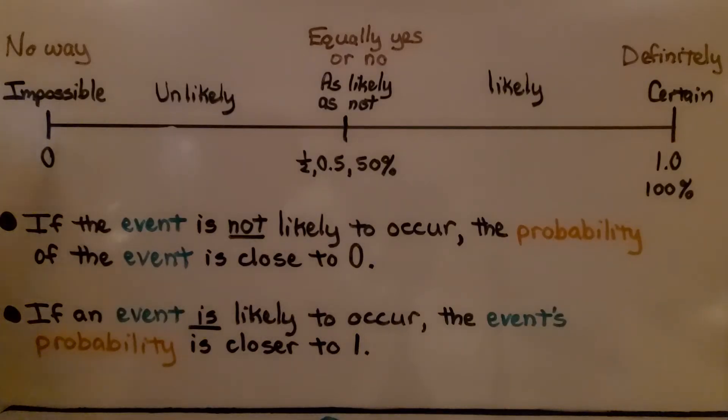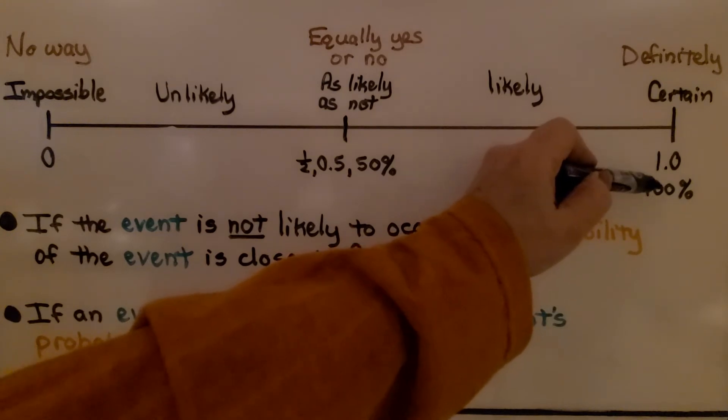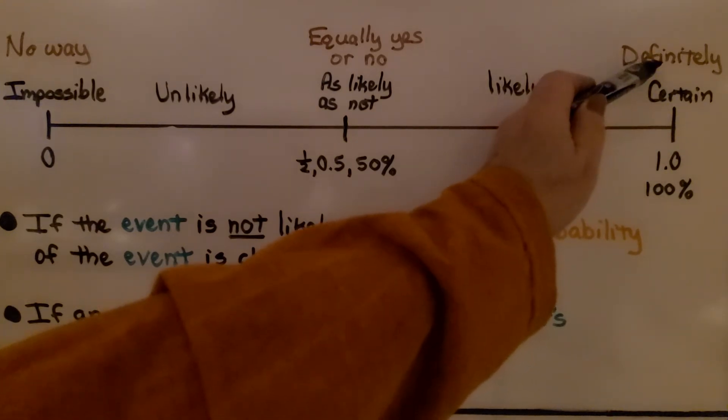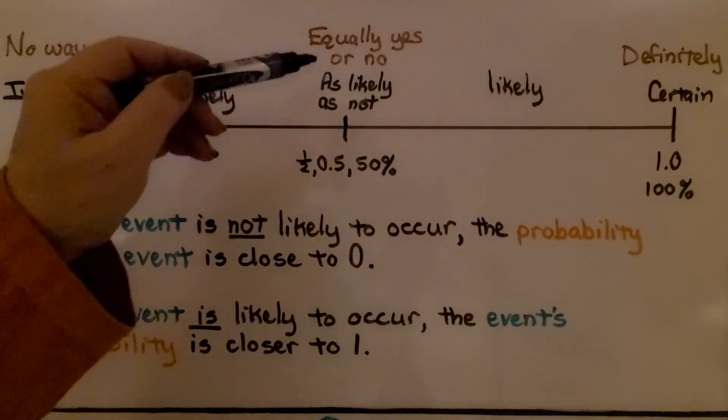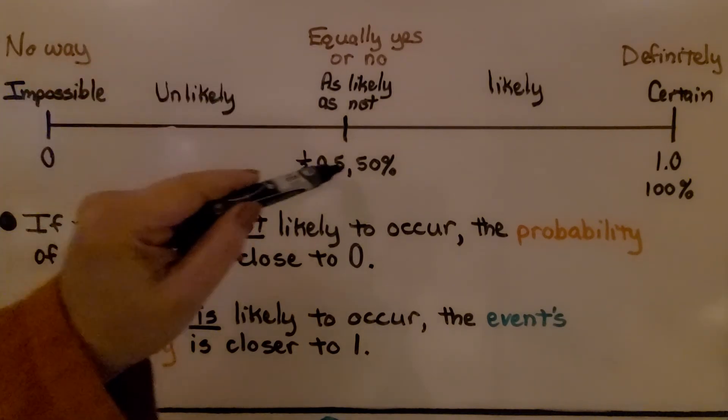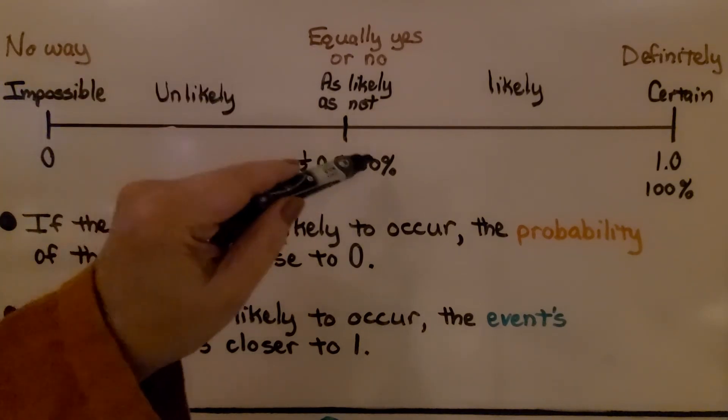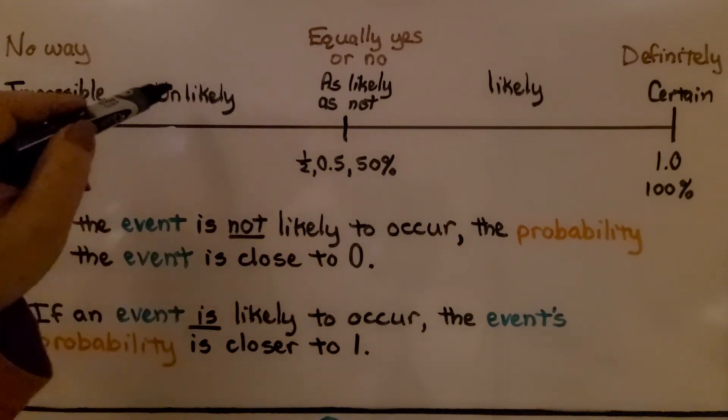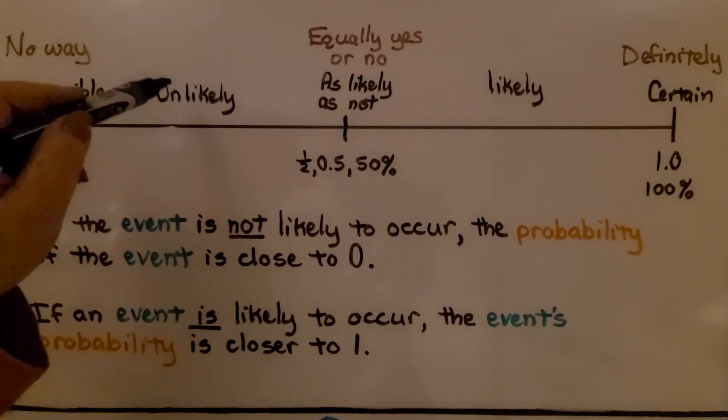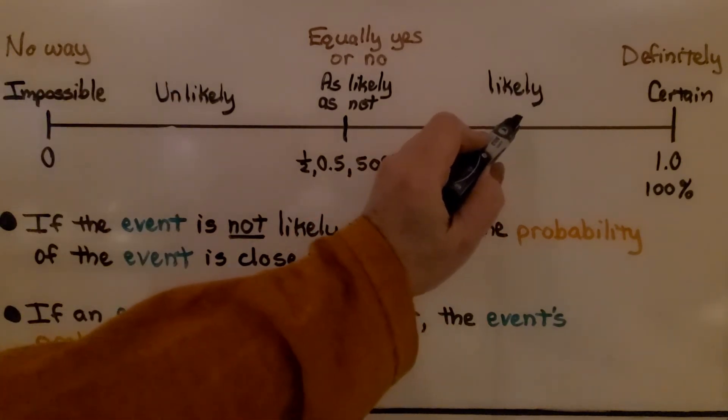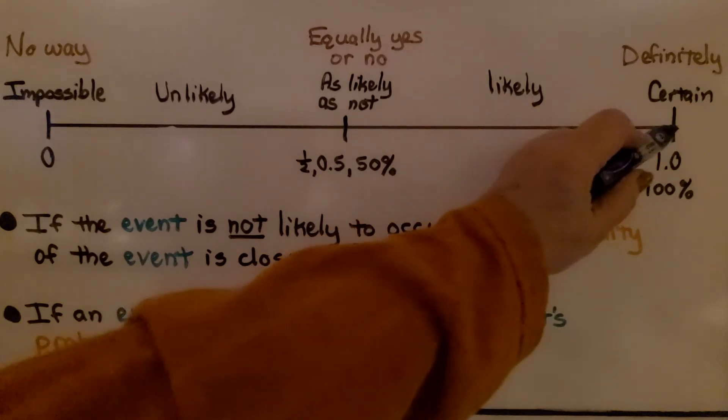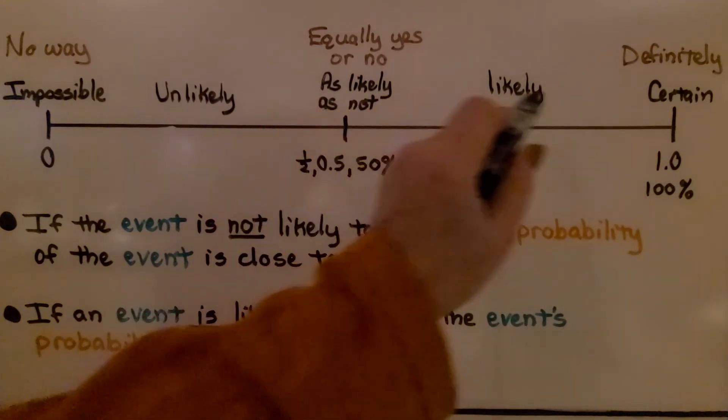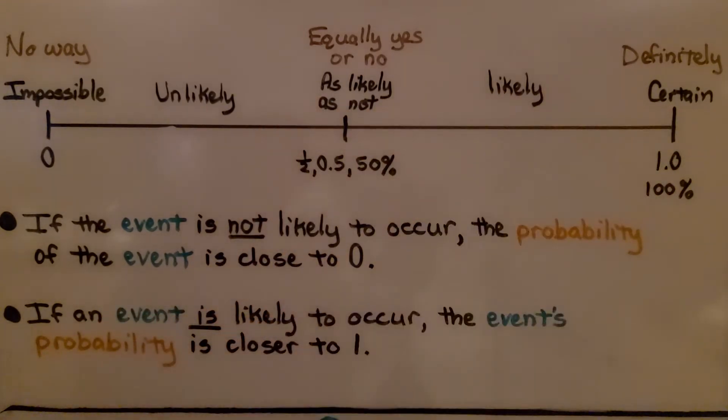Here we have this number line where zero is impossible. That's no way it's going to happen. And one or 100% is certain that it's definitely going to happen. We have equally yes or no, as likely as not likely, which is the halfway mark, 50% or five tenths. In between zero and the halfway mark, we have unlikely but it still could happen. And over here, we've got it's likely to happen but it's not certain.